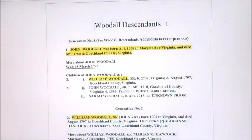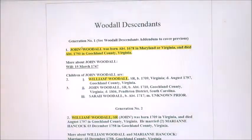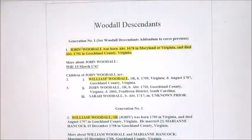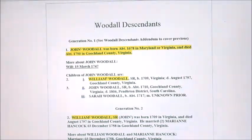Now that you have your information in Word, you can see at the top that you've got John Woodall with a little one next to his name. The premise is that he is the original person that arrived in Virginia or Maryland around 1678. To look up your actual ancestors, you don't want to start at the top of this document — what you want to do is go Control+F to search for your grandparent.